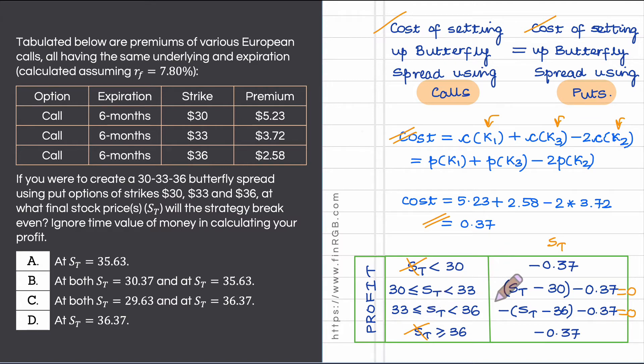What you will observe is that for this sub interval when S t is equal to 30.37 breakeven happens. For this sub interval when S t is equal to 35.63 breakeven happens.